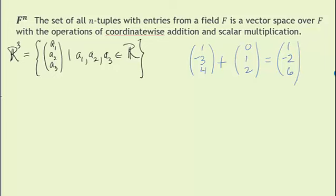And if we want to multiply a scalar times a vector in R^3, for example 2 — coming from the field R — times (1, -3, 4), multiplying each component we have (2, -6, 8). So again, I know you're familiar with this, but let's mention one more thing.